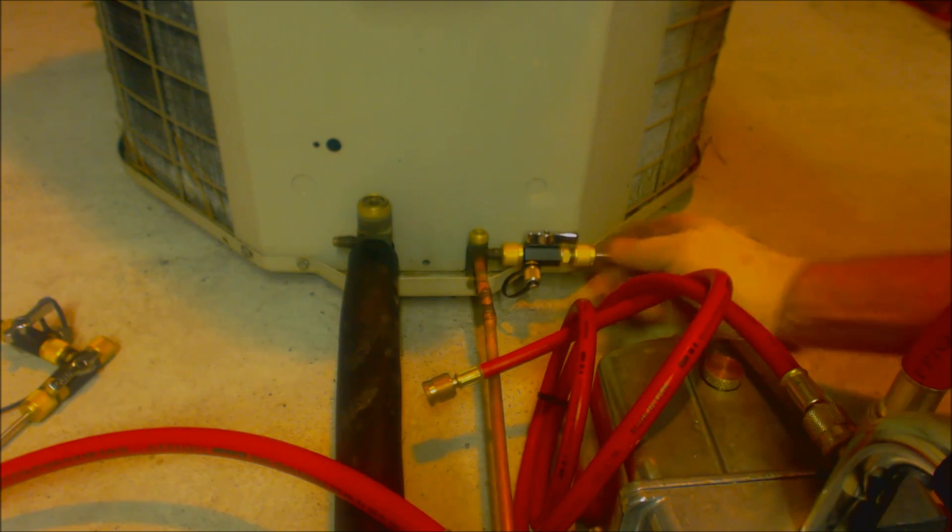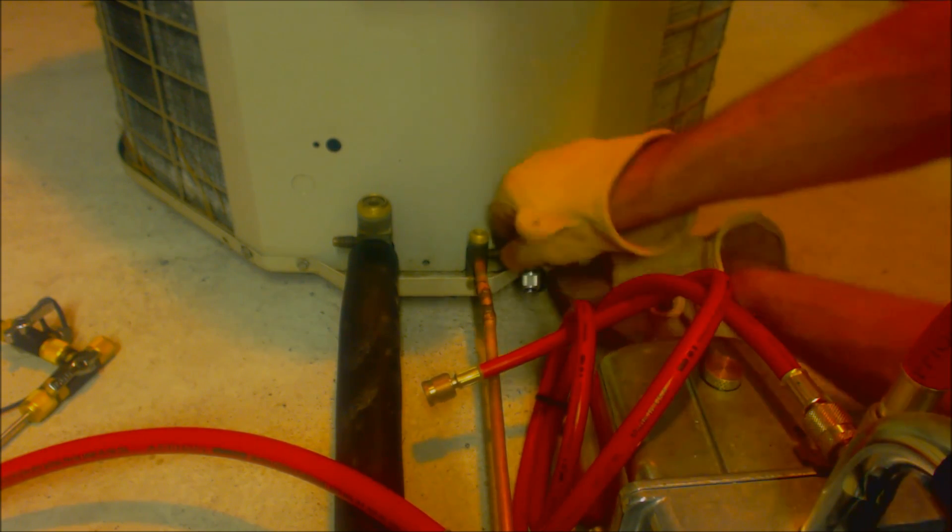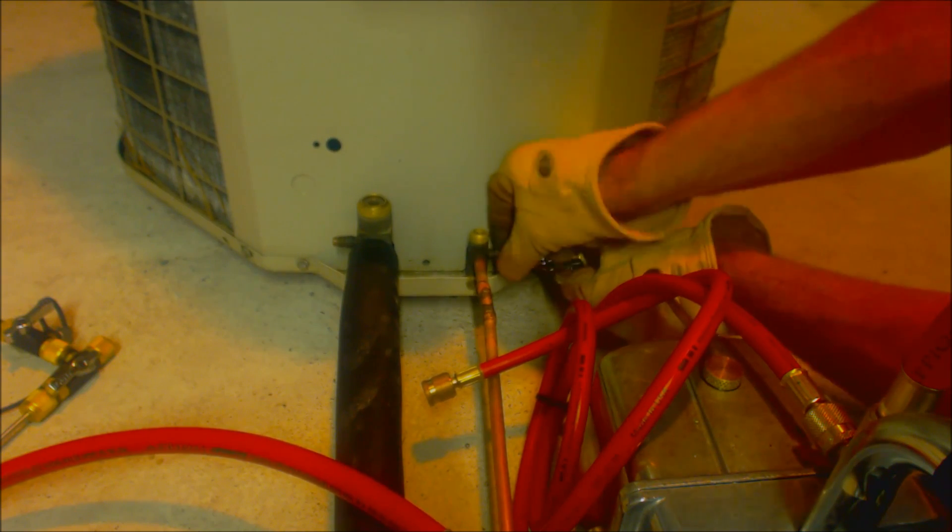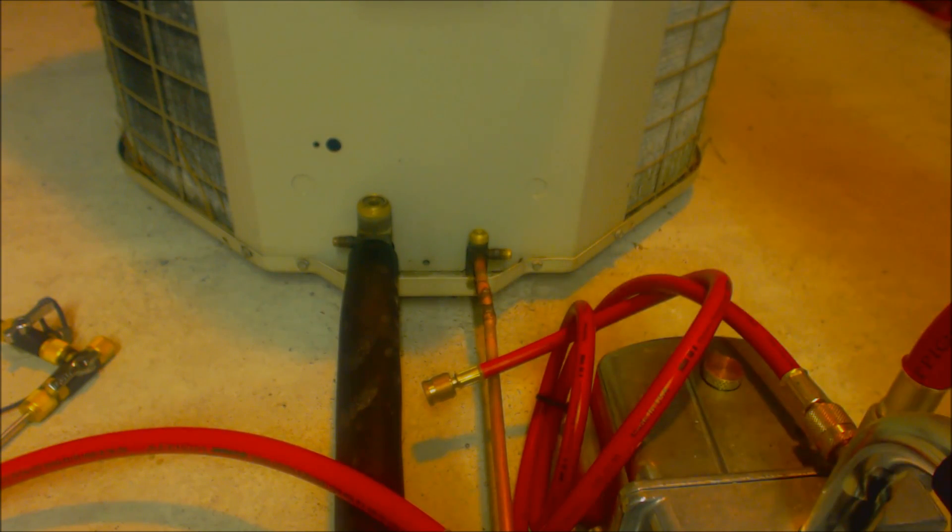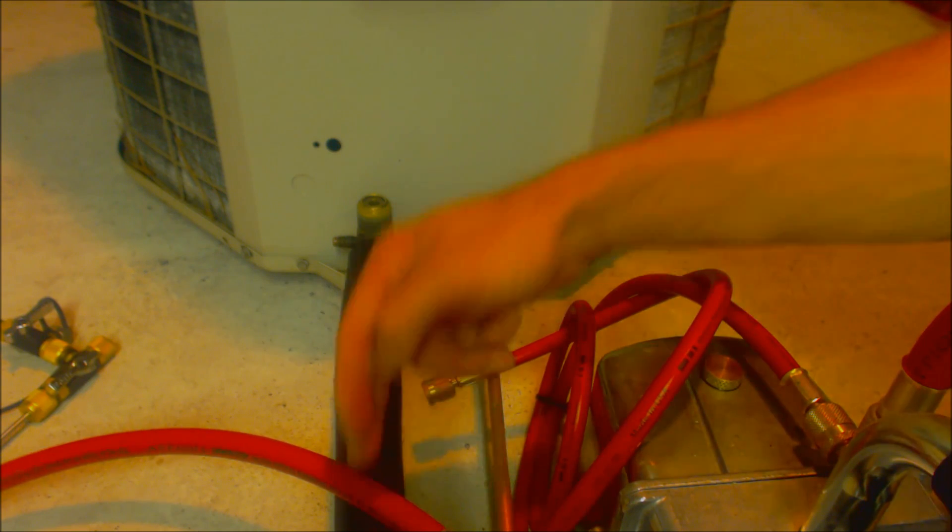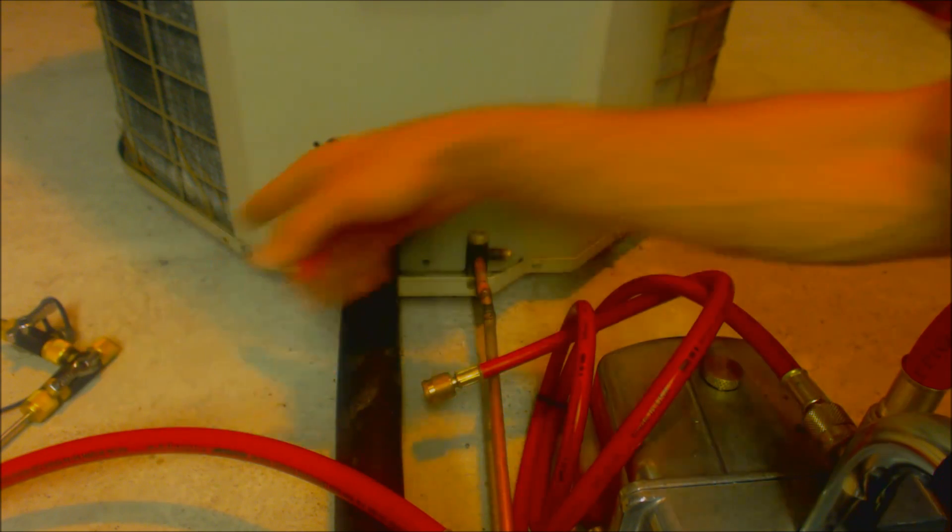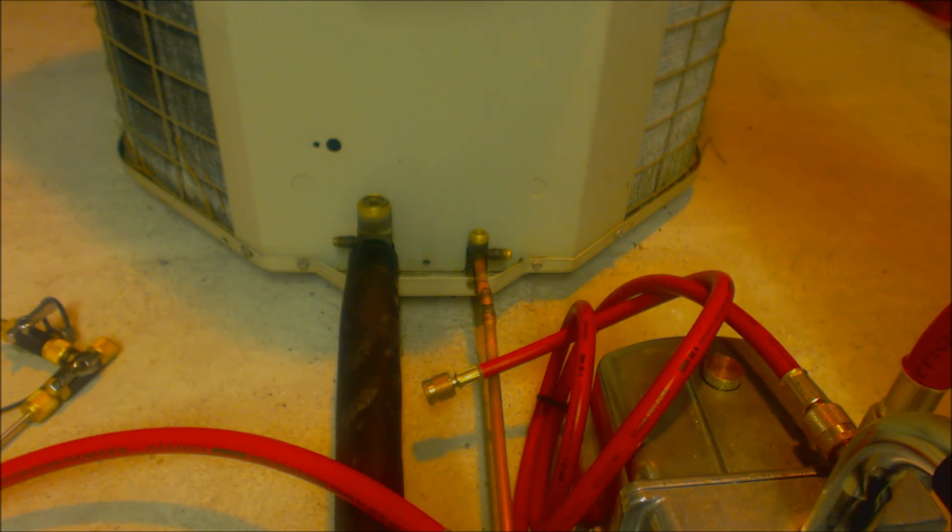Okay. Now you can go ahead and attach your manifold gauge set, turn the unit on, and check the refrigerant charge. Just so you know, I attached tool links in the description below of everything that I used here: the vacuum hoses, the vacuum pump, the valve core removal tools, the micron gauge, the service wrench, all of those things. Hope you enjoyed yourself. We'll see you next time at AC Service Tech Channel.